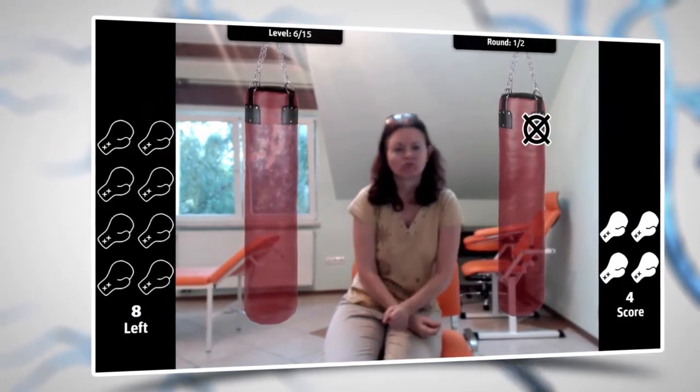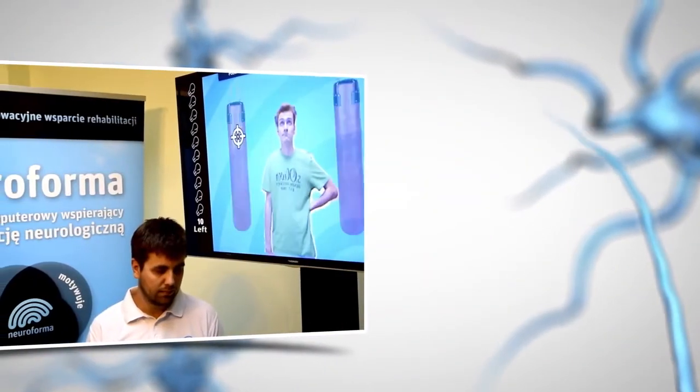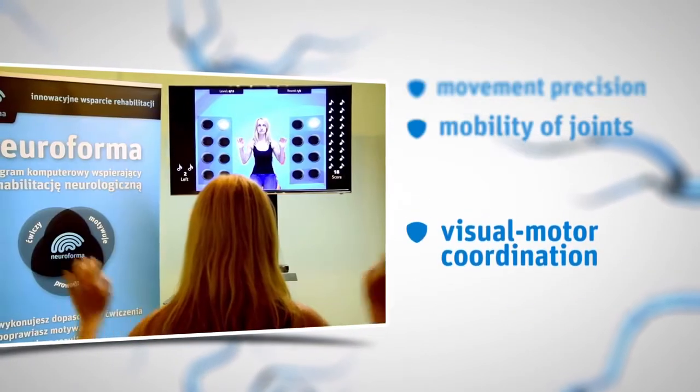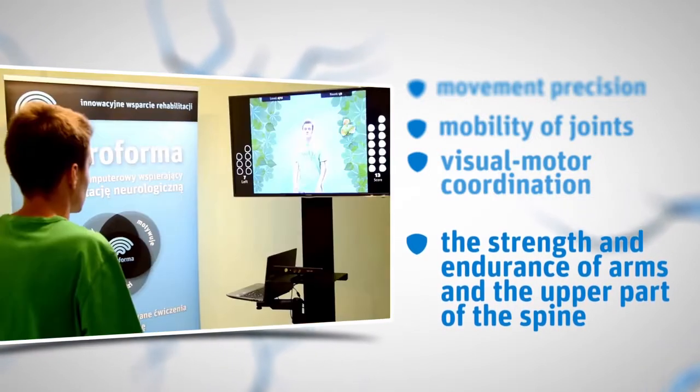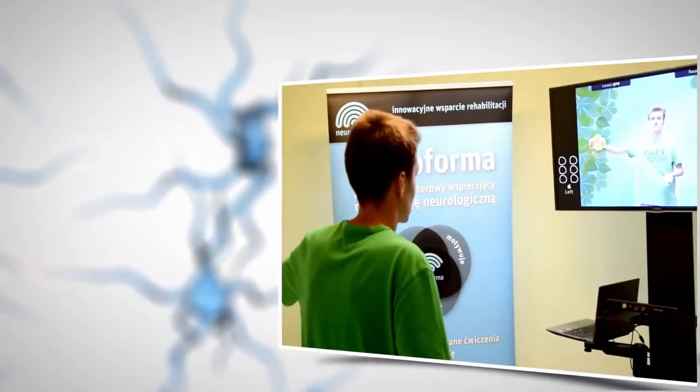Neuroforma enables the simultaneous training of motor and cognitive functions. Exercises are designed to enhance movement precision, mobility of joints, visual-motor coordination, the strength and endurance of arms and the upper part of the spine, along with perception.